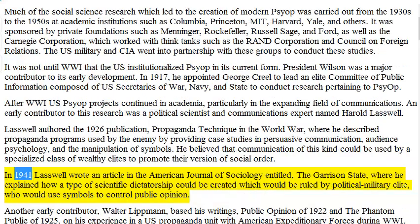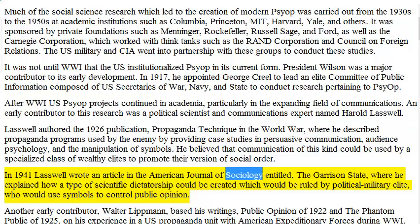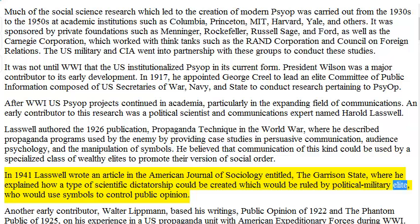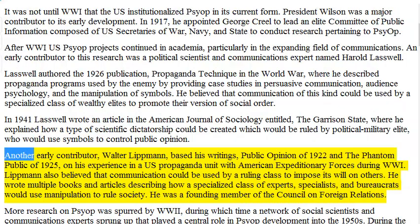In 1941, Lasswell wrote an article in the American Journal of Sociology entitled The Garrison State, where he explained how a type of scientific dictatorship could be created which would be ruled by a political-military elite who would use symbols to control public opinion.